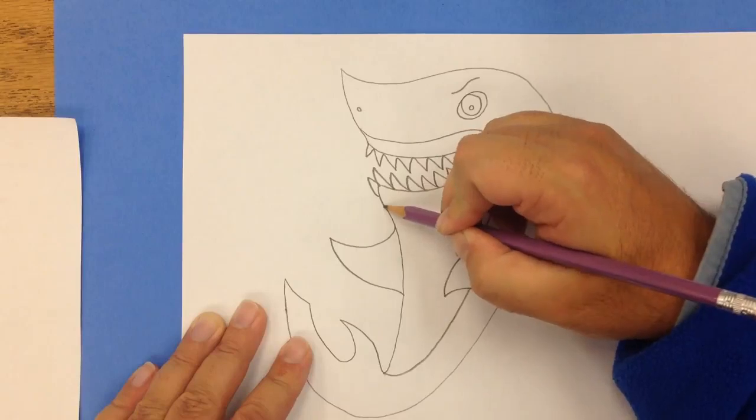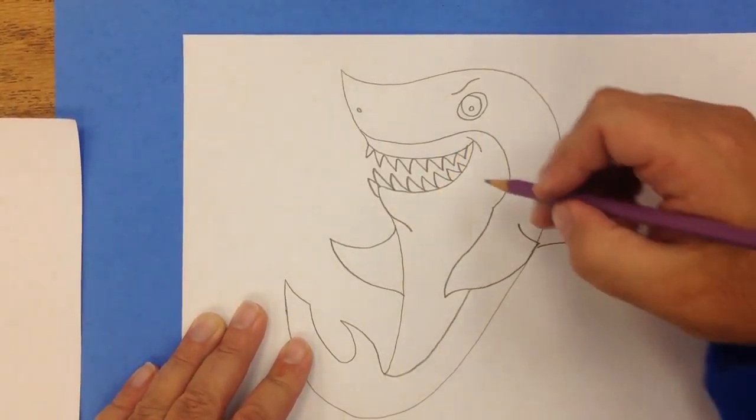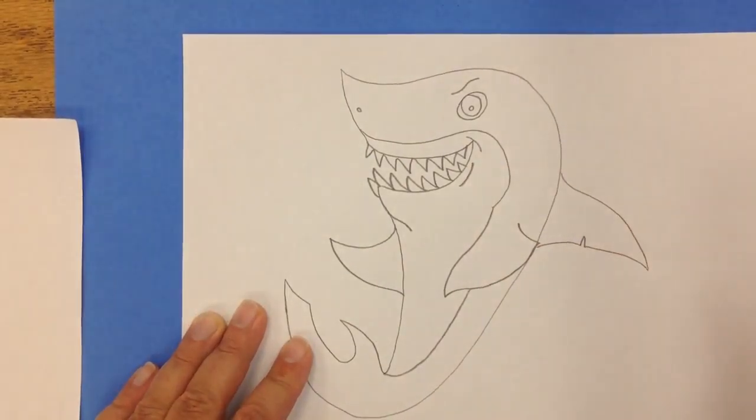And then right here where I'm going to draw what looks like a chin, just kind of emphasize it with that line. Add another one right there to give even more of kind of a smiling look.